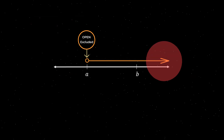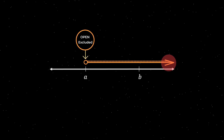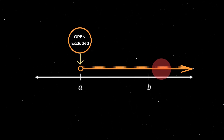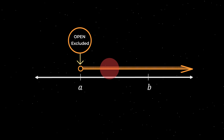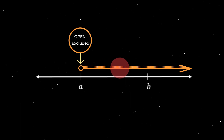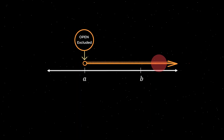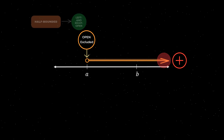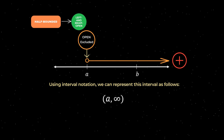In other words, on the left, the interval is open because the real numbers go on forever, approaching but never actually reaching the number A. Similarly, on the right, the interval is also open because the real numbers go on forever, in this case in the positive direction of the number line.